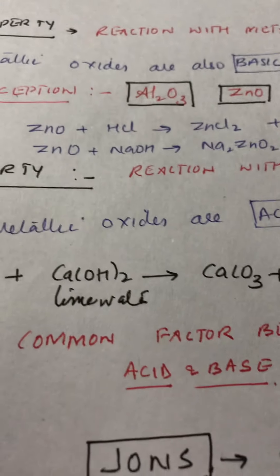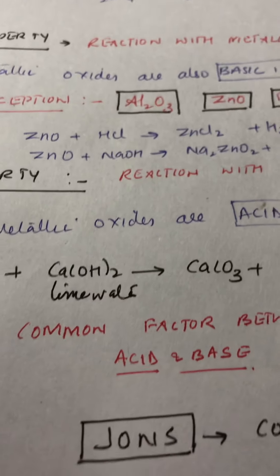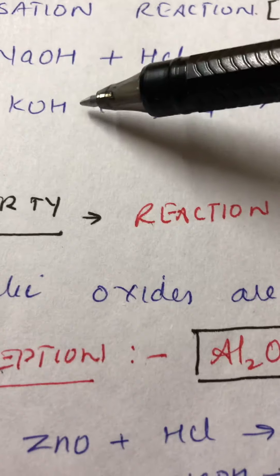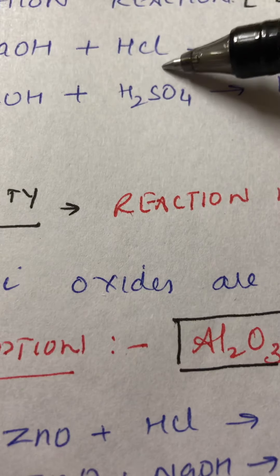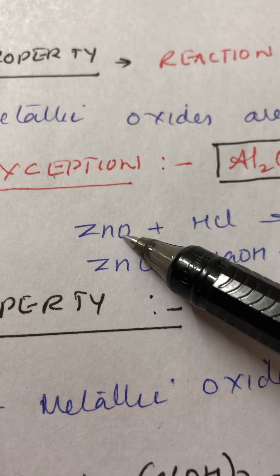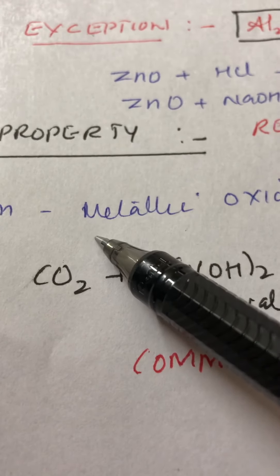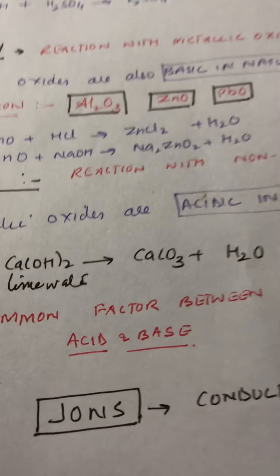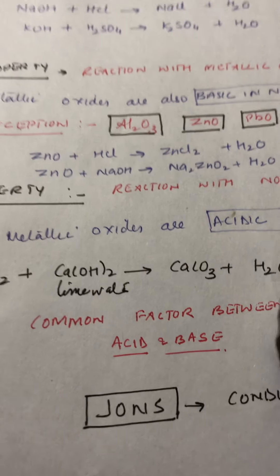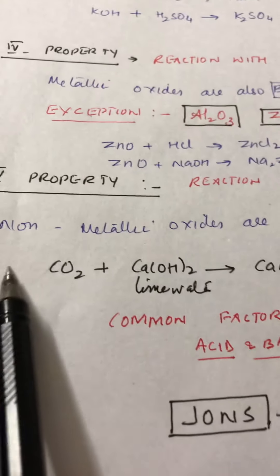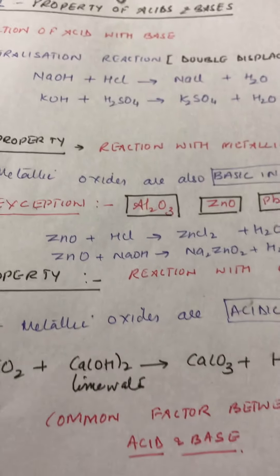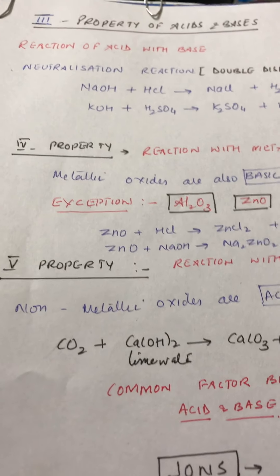This is also a neutralization reaction. All these are examples of neutralization reactions in which acids and bases are reacting. However, a proper neutralization reaction takes place between a pure base and a pure acid. Here, these reactants are not pure acids or bases — they are acidic or basic — so these reactions are a type of neutralization reaction but are not purely defined as neutralization reactions.